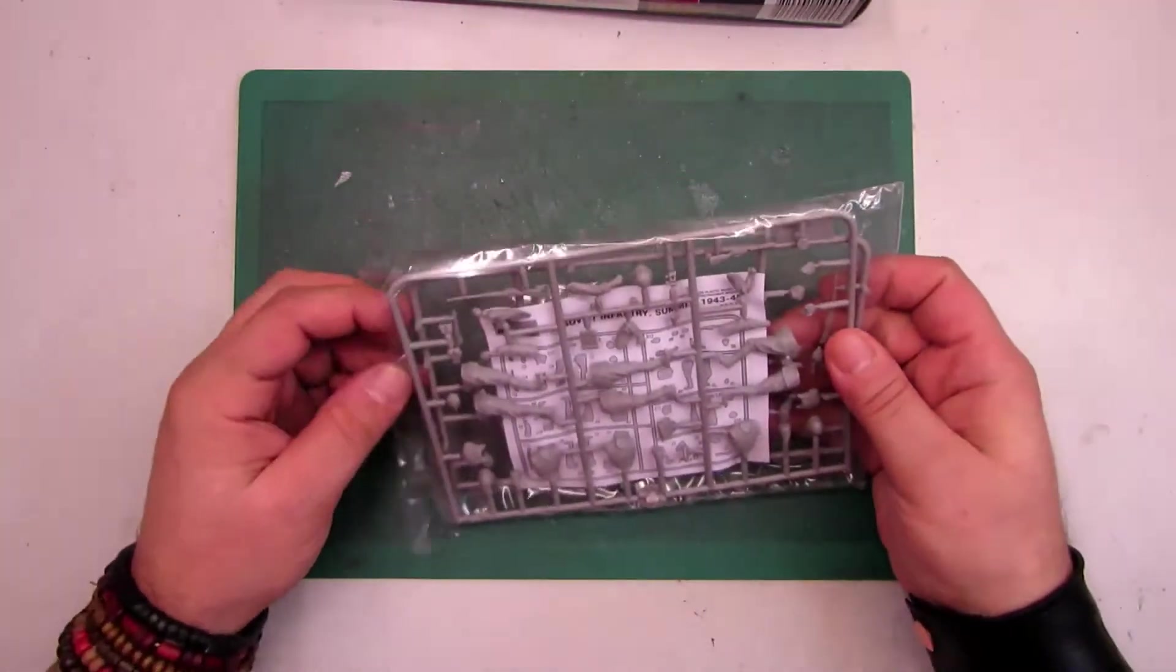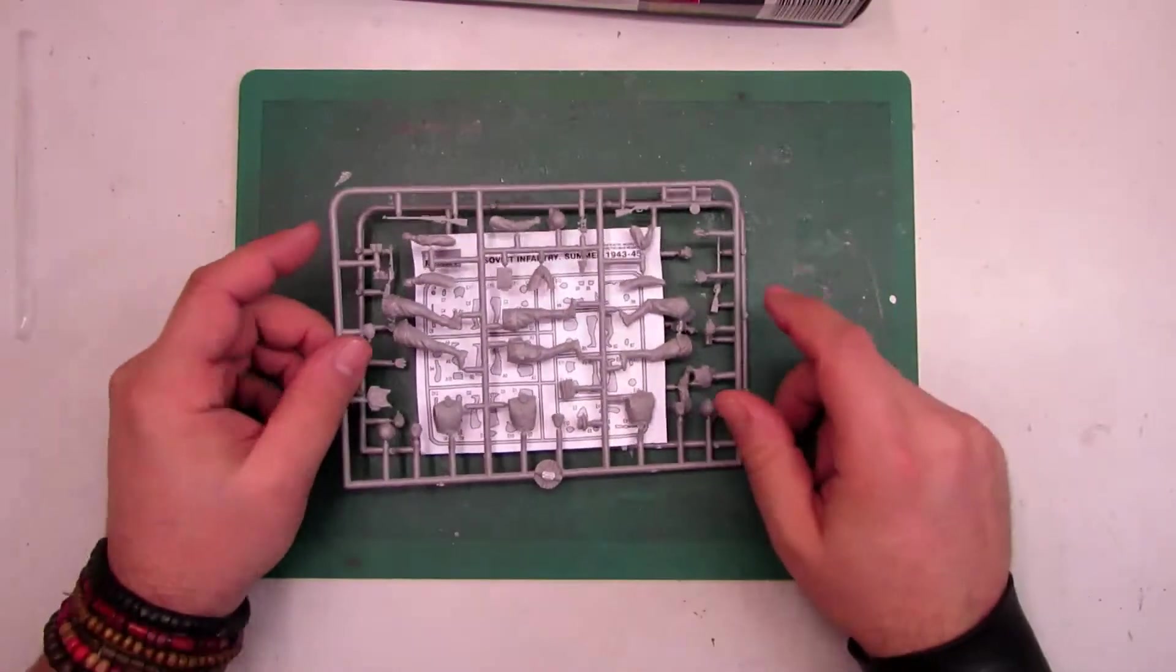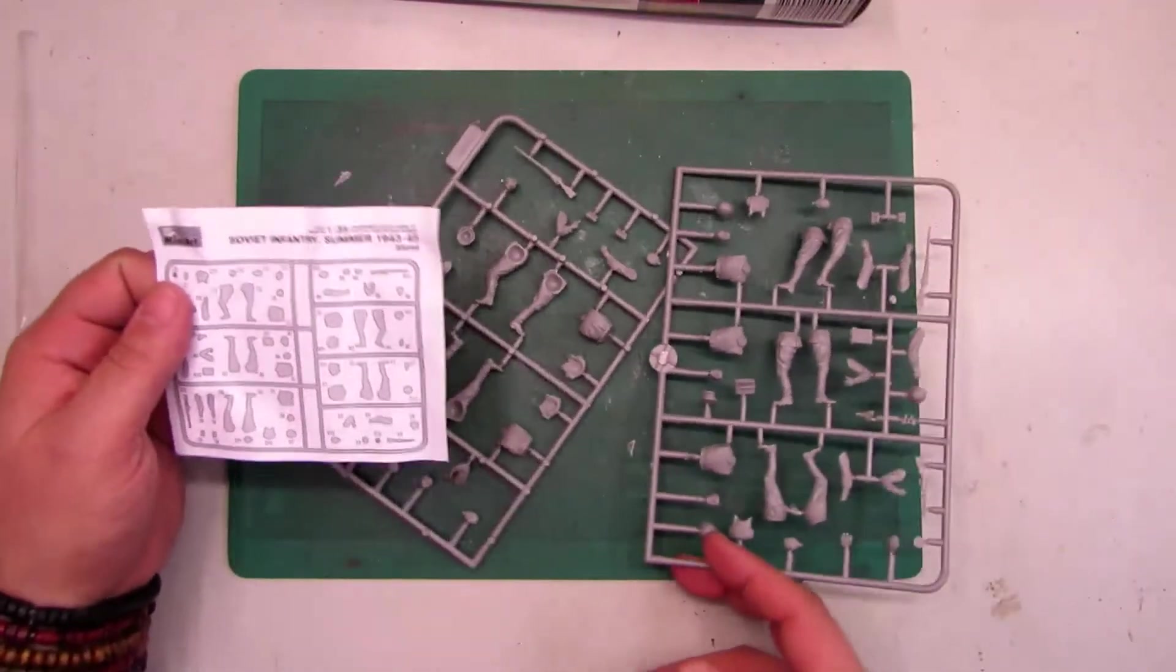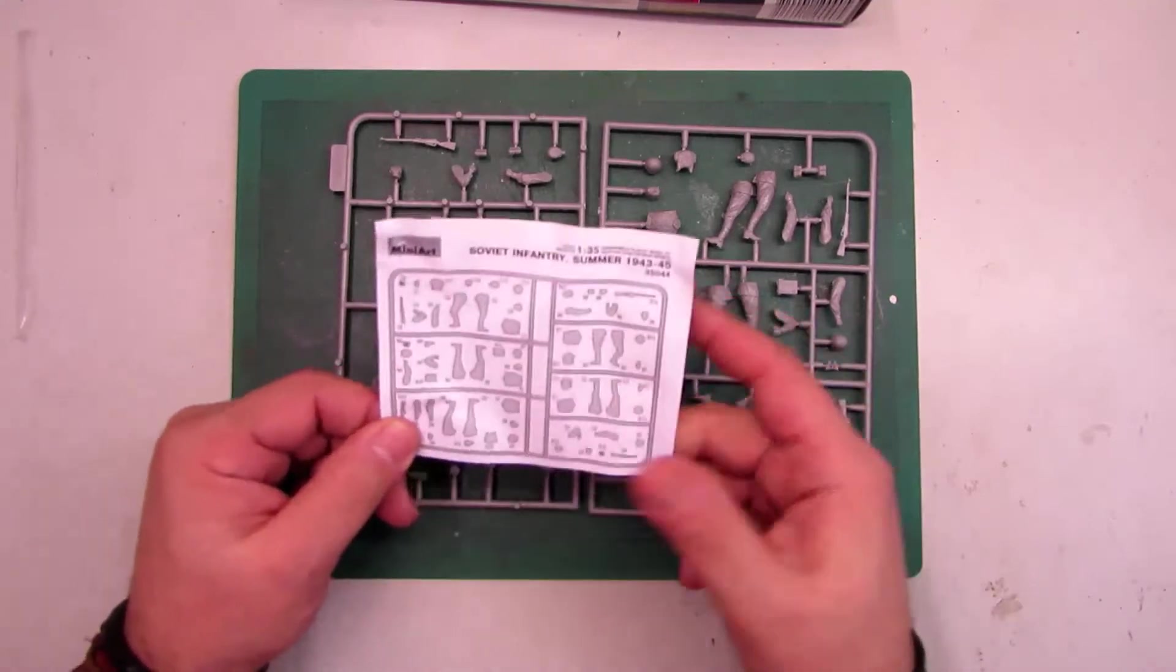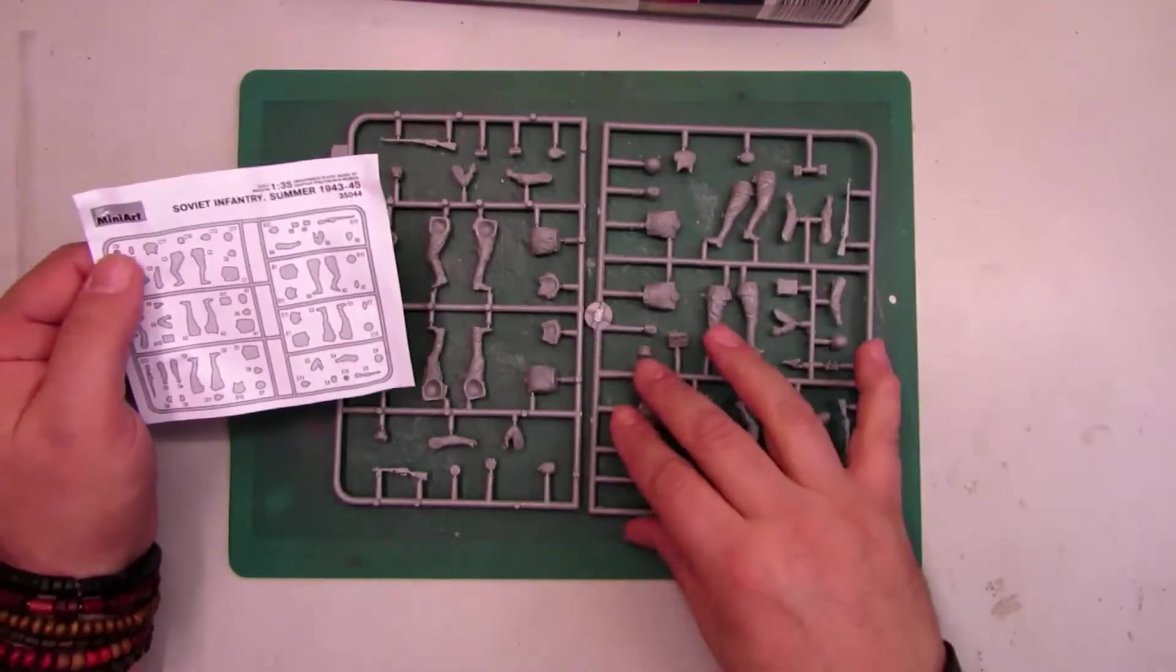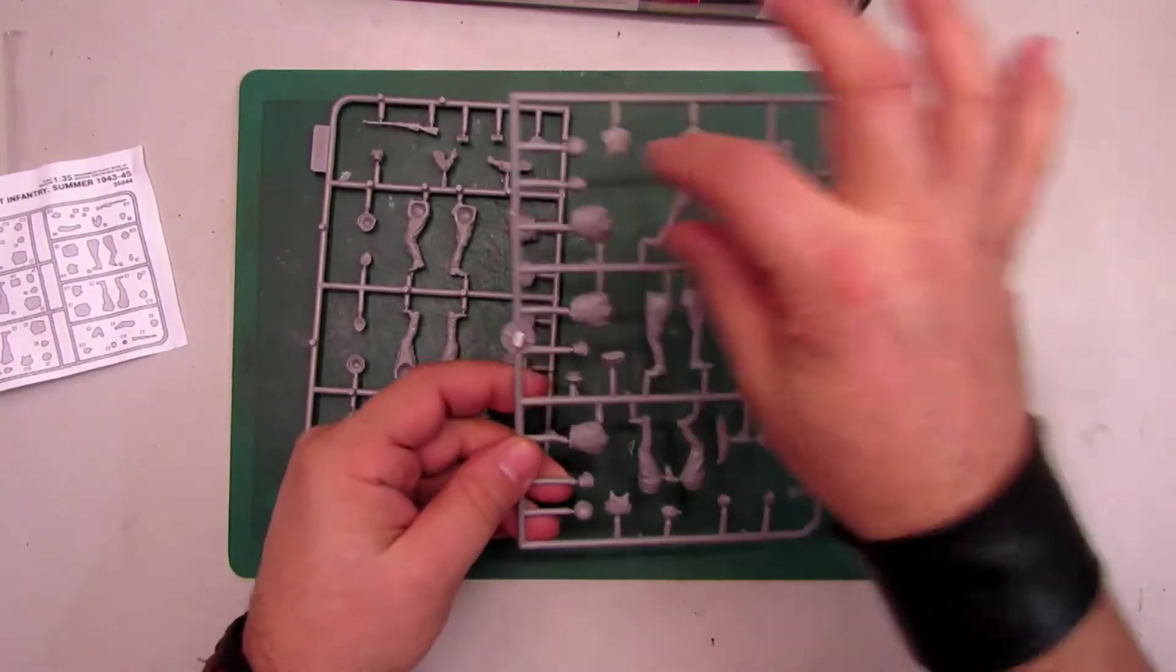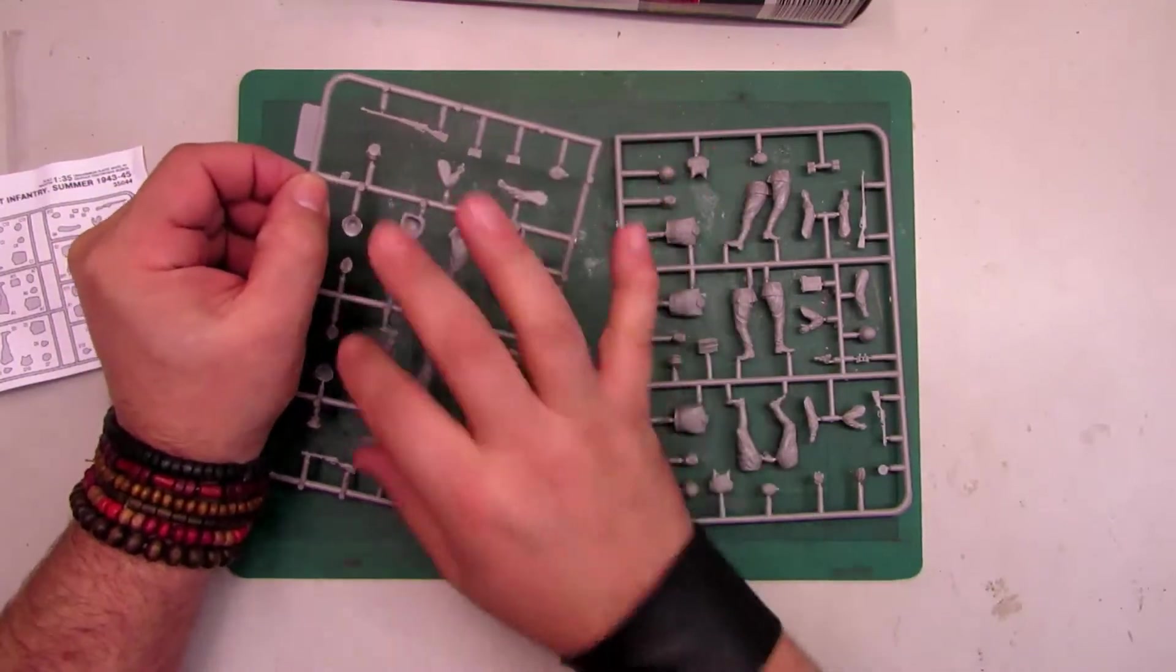For some guys these are not new figures, but there are so many kit reviews, and normally from MiniArt I don't see too much in English, so I want to show you. Here you've got the sprues. You can see the figures - one here, one, two, three here, and we got the other two here.